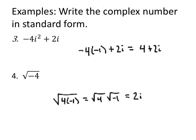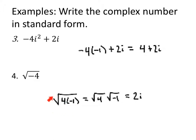Negative 4i squared plus 2i — we'll remember that i squared is negative 1. So negative 4 times negative 1 plus 2i will give us positive 4 plus 2i. And then after we've done some harder work, let's take one easy: the square root of negative 4. Negative 4 is 4 times negative 1. The square root of a product is the product of the square roots — this is simply 2i.